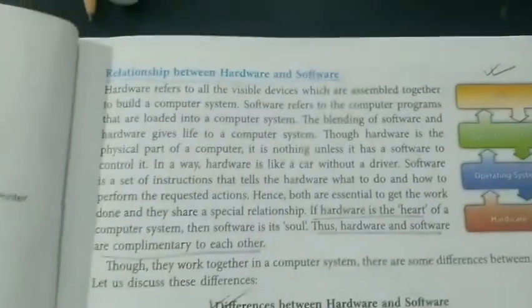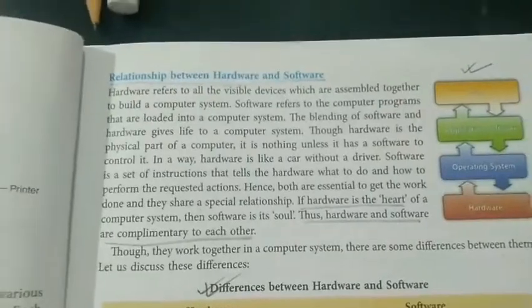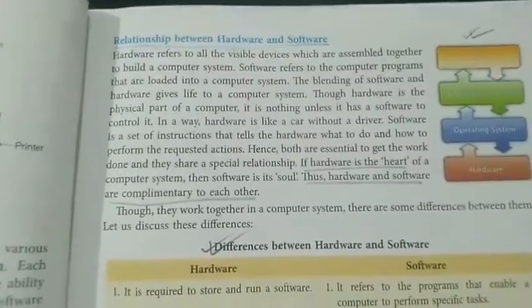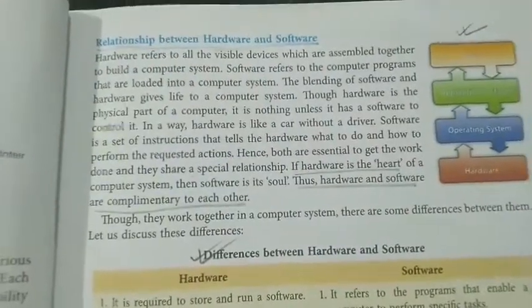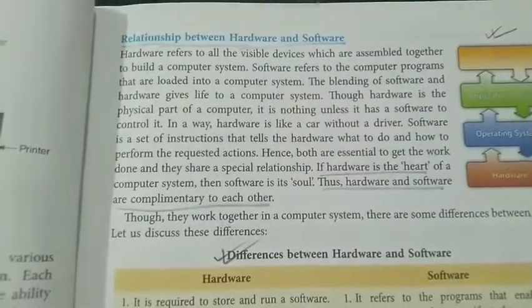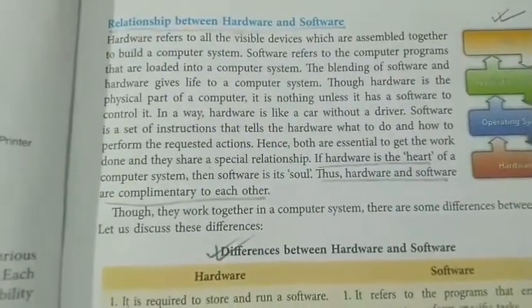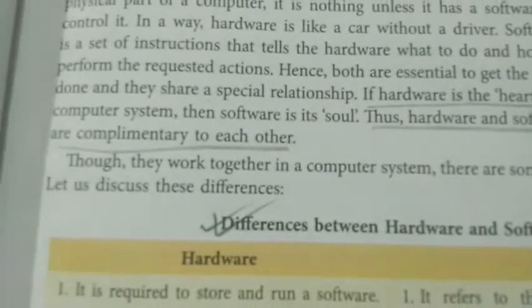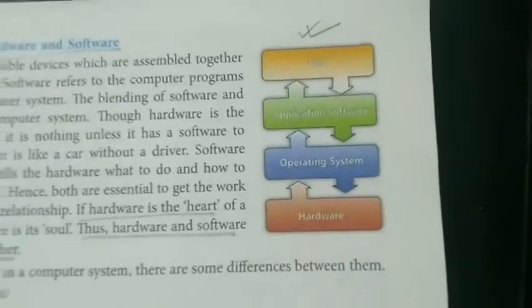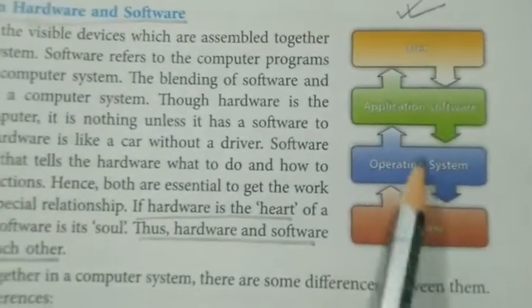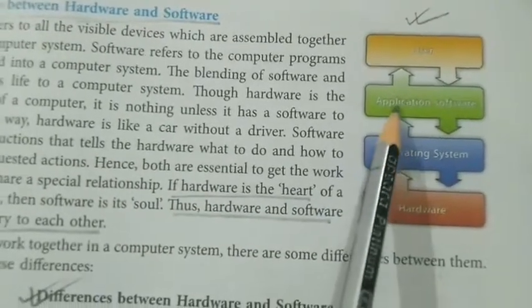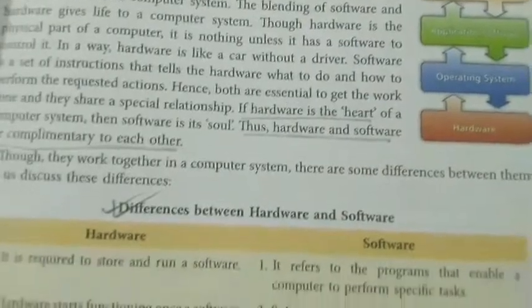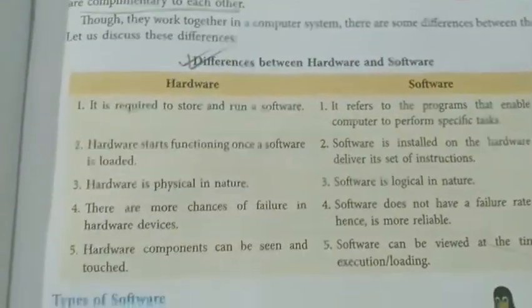When we come to the relationship between hardware and software, we cannot say hardware is more important than software or vice versa. In a computer system, both hardware and software have to work efficiently and coordinately for proper functioning. Thus, hardware and software are complementary to each other. The diagram here shows hardware at the bottom, then operating system, then application software, and the user at the top — all interconnected. Five differences between hardware and software are also given.